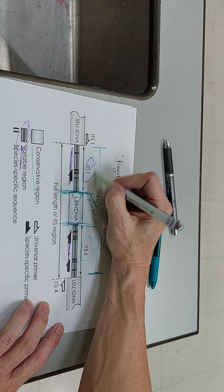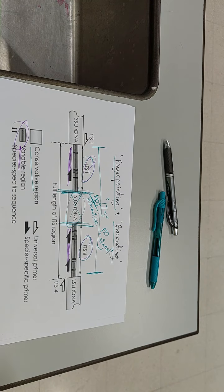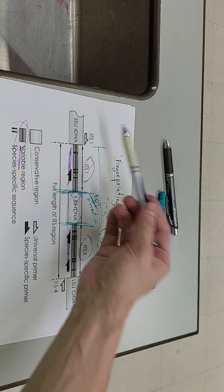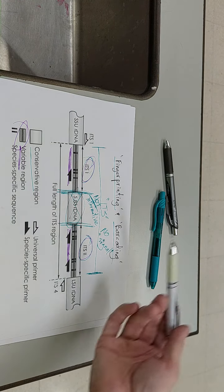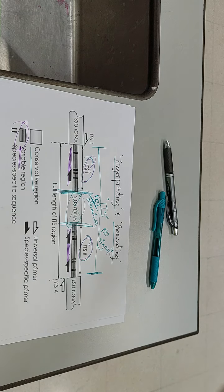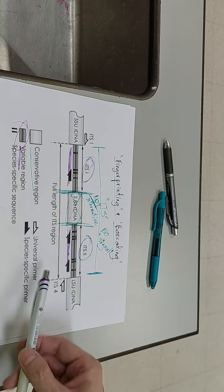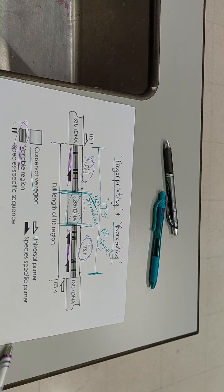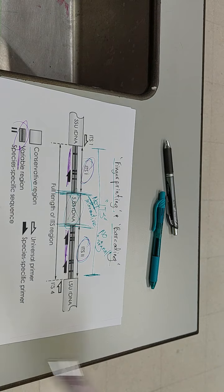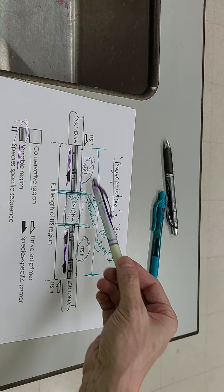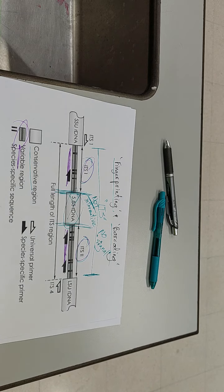The great thing about the ITS1 and ITS2 is if you look at the real name it's called the internally transcribed spacer. Internally transcribed, again if you go back to the central dogma, transcription is the process where essentially RNA gets turned into proteins. I should say that's translation, I said that wrong.